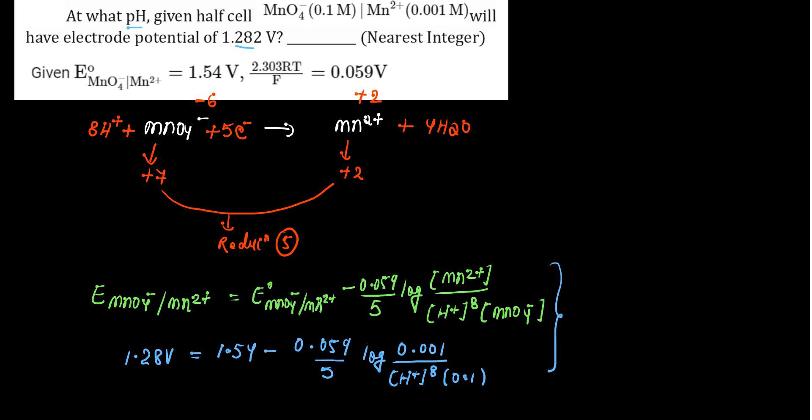Ab isse solve karna hai. So 1.28 se subtract kar denge 1.54. Let's see what we get. So 1.28 minus 1.54 this will give us minus 0.26. That is equal to minus 0.059 upon 5 log. Ab 0.001 or neeche 0.1 hai, isse solve karte to ye ho jata 0.01 divided by H plus to the power 8.